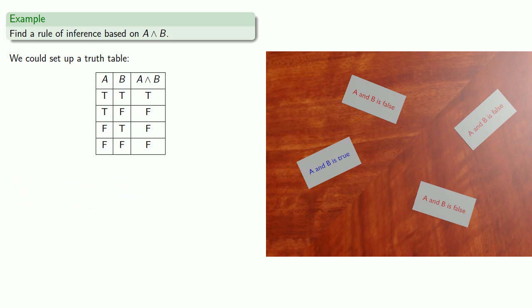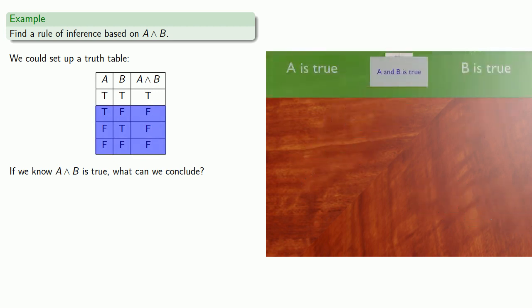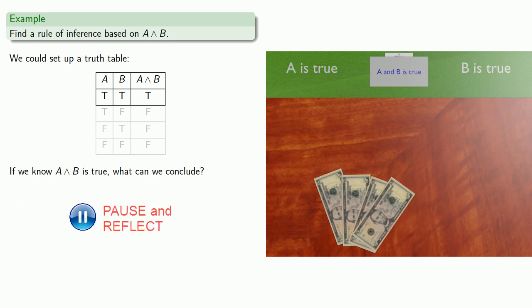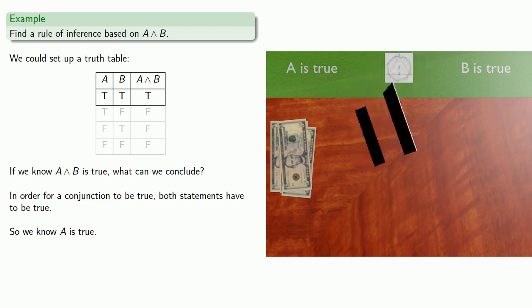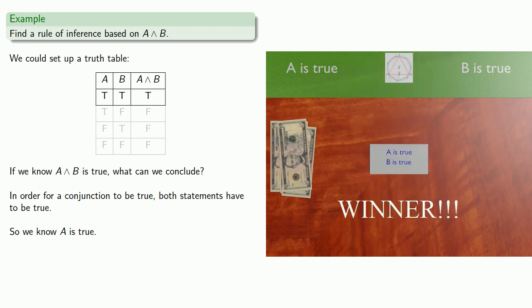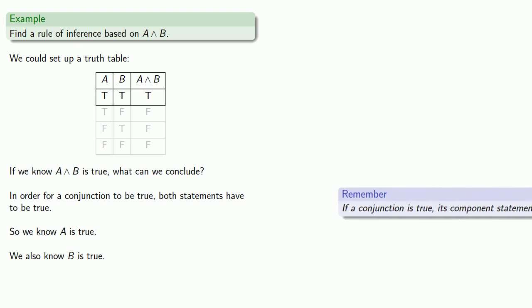So if we know that A and B is true, what can we conclude? We know we're not dealing with any of the cases where A and B is false. You have $20 — what will you put it on? Remember that in order for our conjunction to be true, both statements have to be true. So we know A is true, and if we put our $20 on A is true, we win. We could have also put it on B is true. This leads to the rule of inference: if a conjunction is true, its component statements are true.